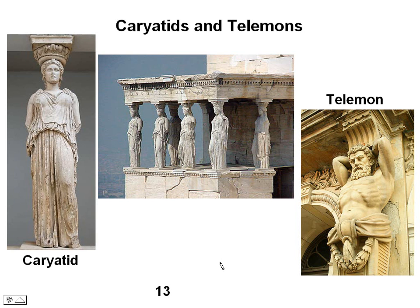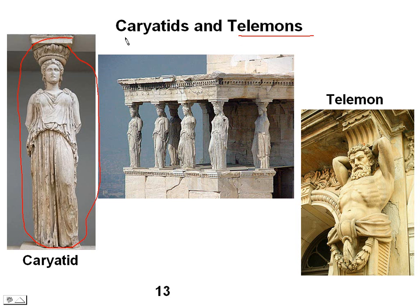Here's a different type of column. A caryatid is a column made to look like a statue. Here we have a little porch on a temple entirely supported by caryatids — they're female figures. If it were a male figure, it would be called a telamon, sometimes called an atlas also, but telamon is the name that is more or less the male version of the caryatid. So this is a fourth type of column.